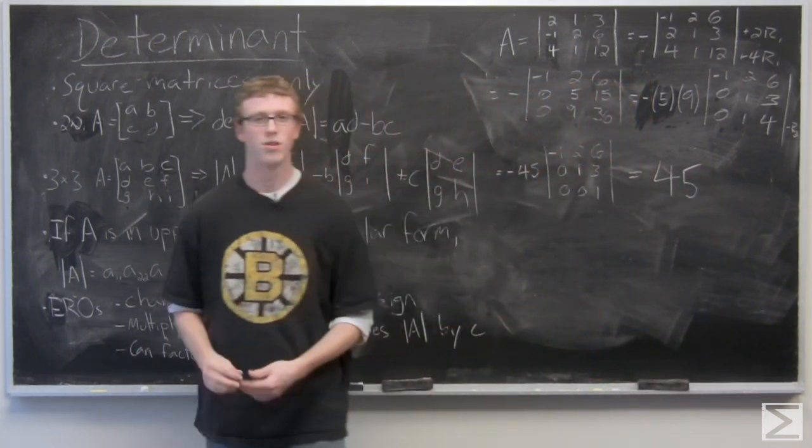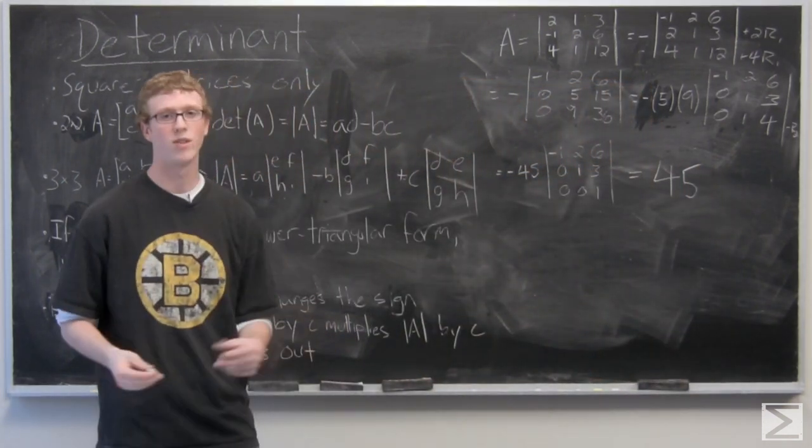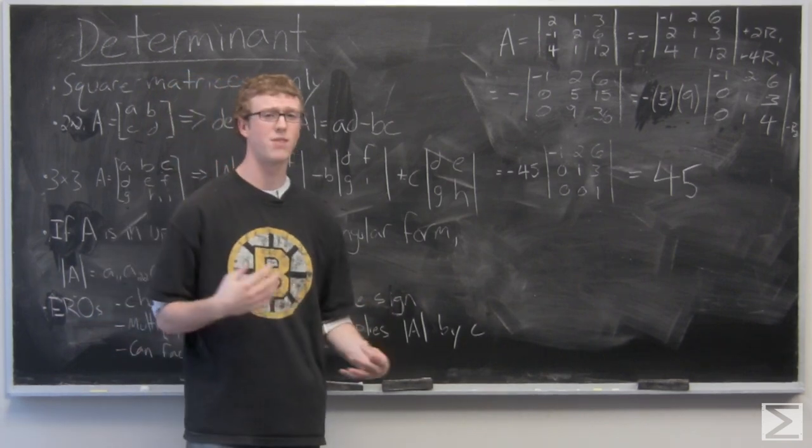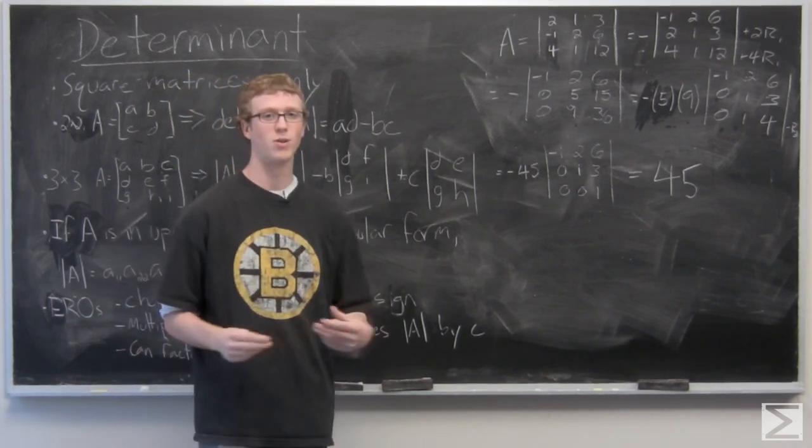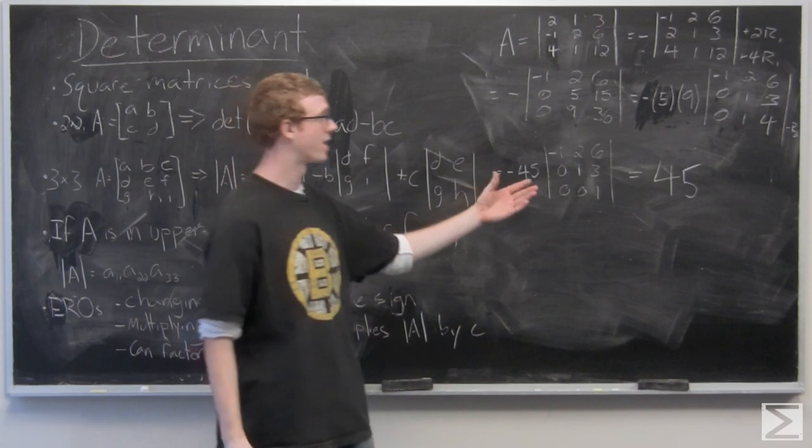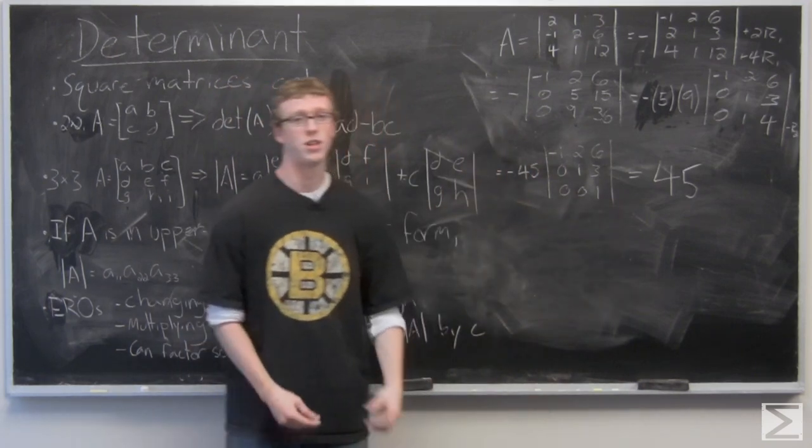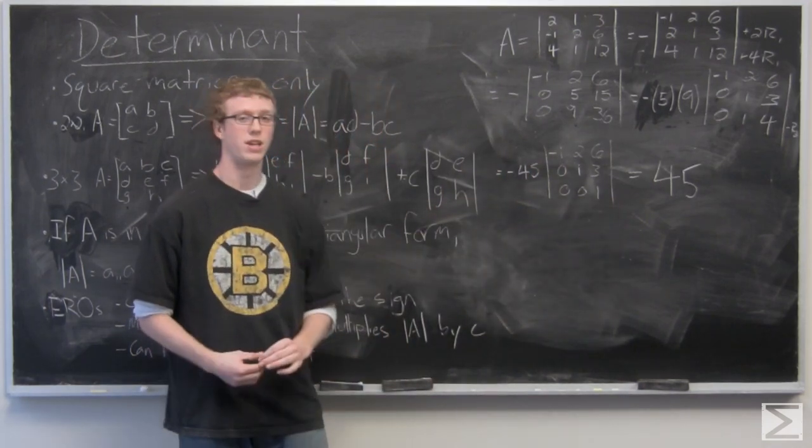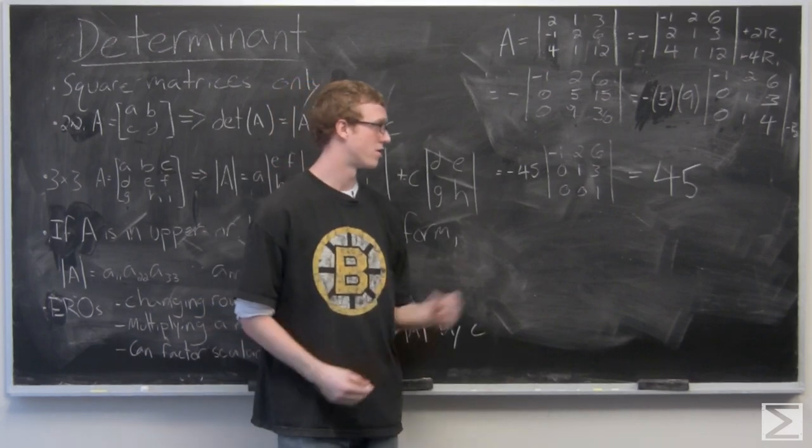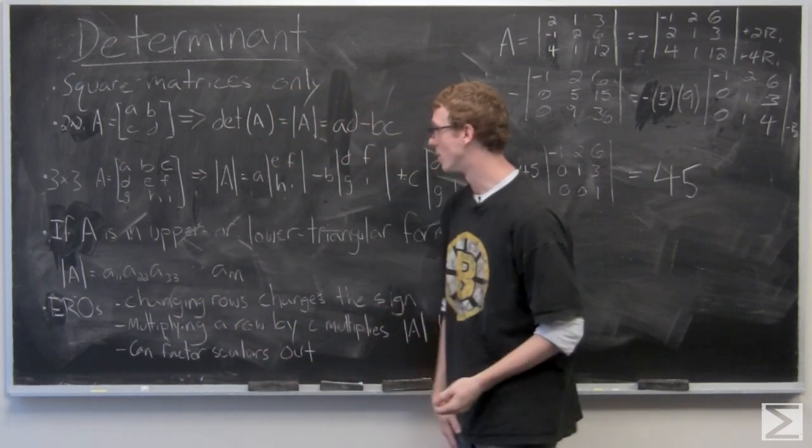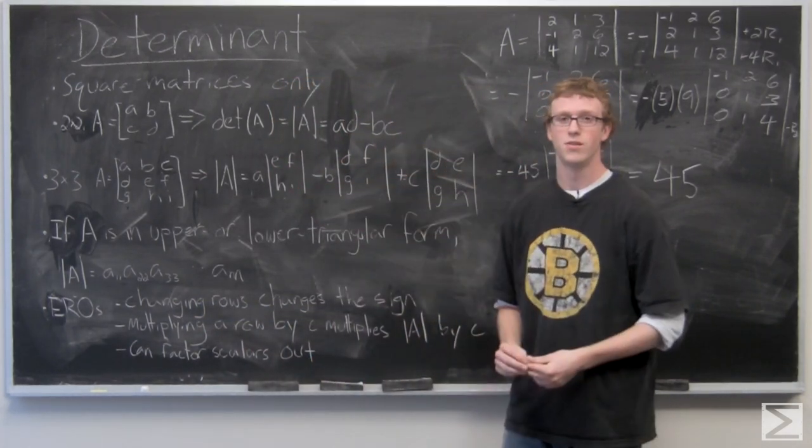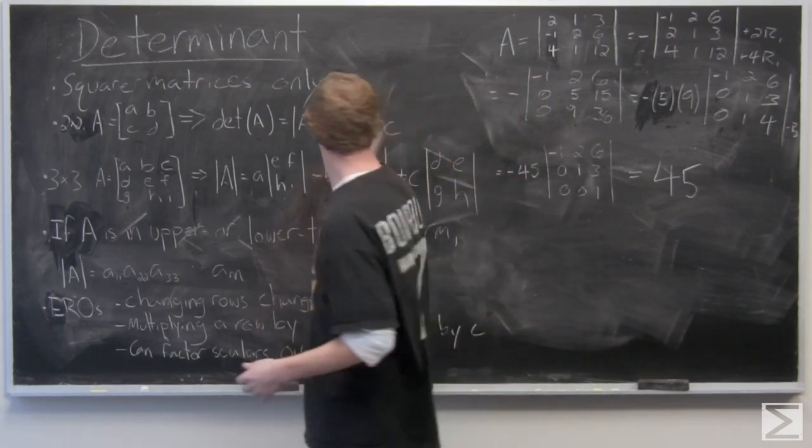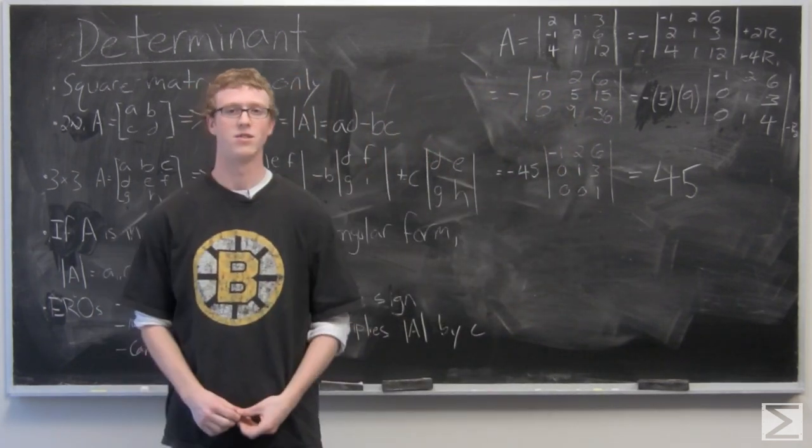So when you're using elementary row operations to find the determinant, you do have to be very careful and make sure that you always have the correct sign and that you're always multiplying by the scalars that you're factoring out or multiplying the determinant through by. But we can see that elementary row operations do indeed help us get to the same form. The determinant of that matrix A that we looked at is 45.